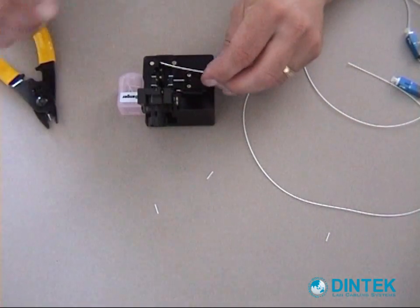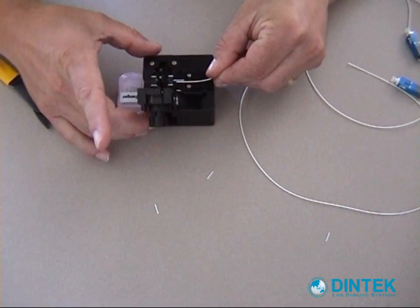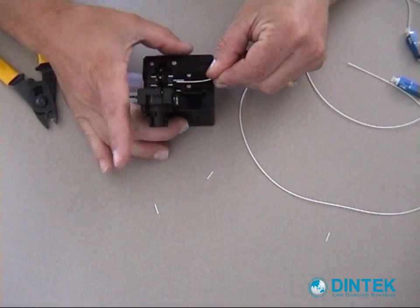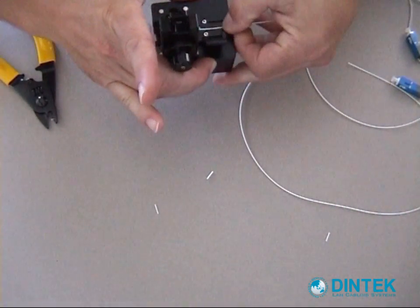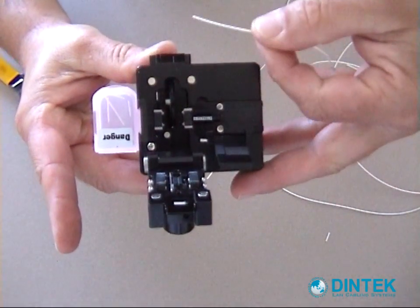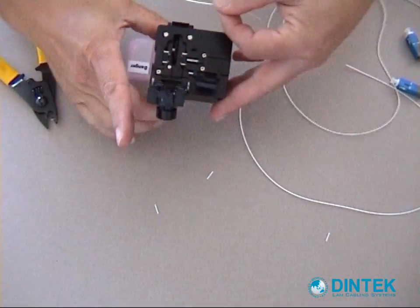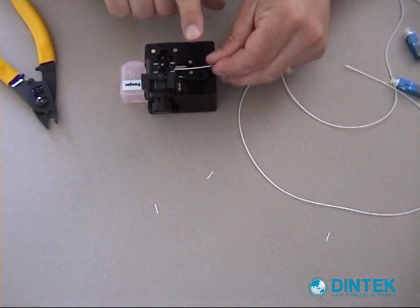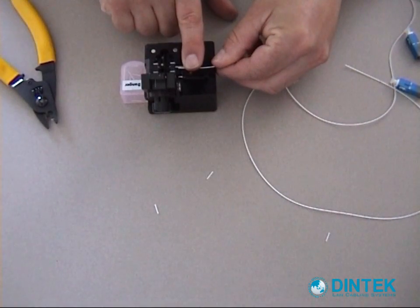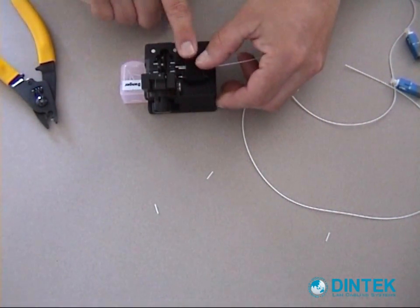We're going to put the fiber in, keeping it to about 12.5 mils for these. You'll see inside these cleavers they have some numbers that you can actually line the fiber up to the exact length that you need. For us it's going to be 12.5 mils. Put that there. Hold the fiber in place.